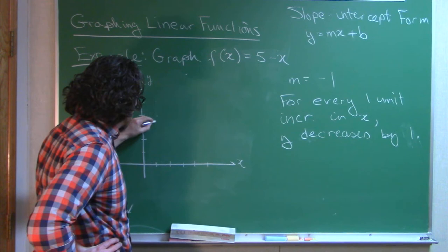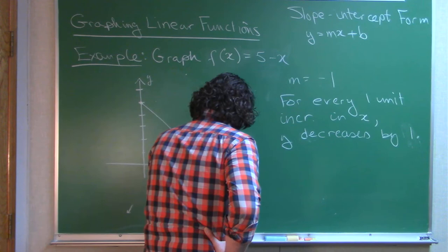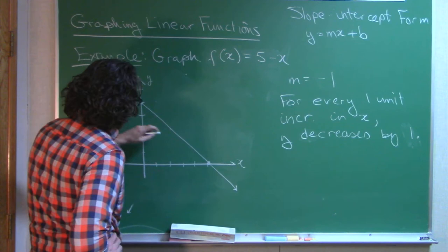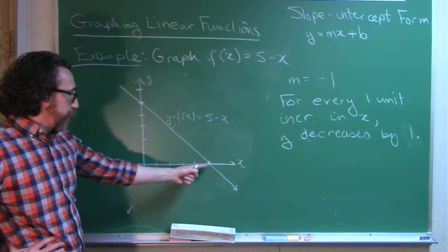So over 1, down 1. Over 1, down 1. Over 1, down 1. We keep going over 1, and down 1. And we see this is the graph of y = f(x) = 5 - x.